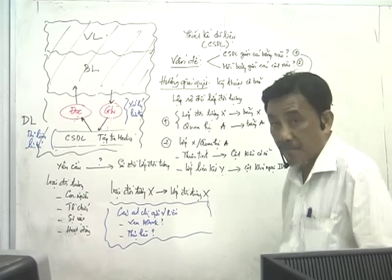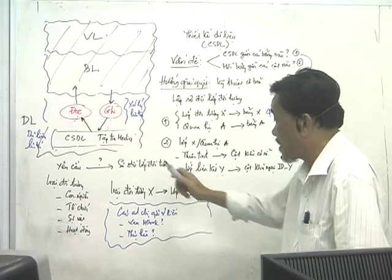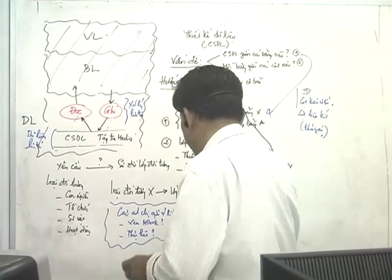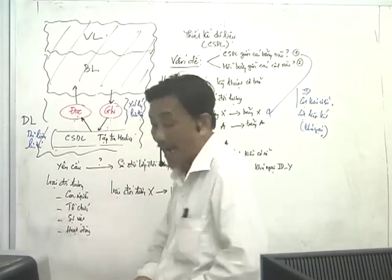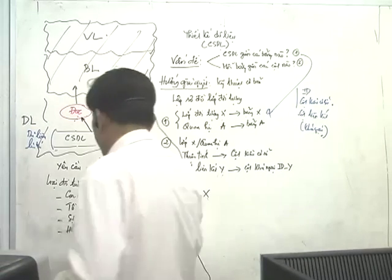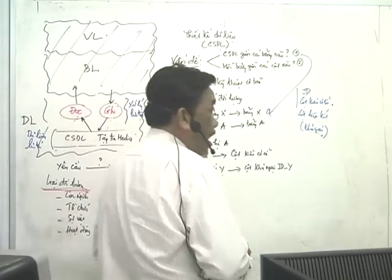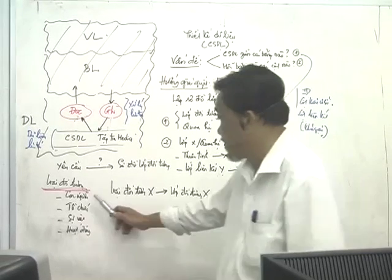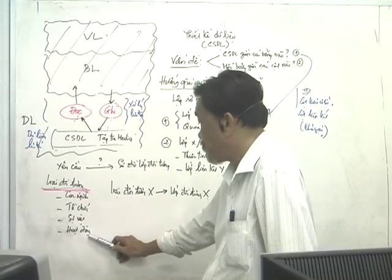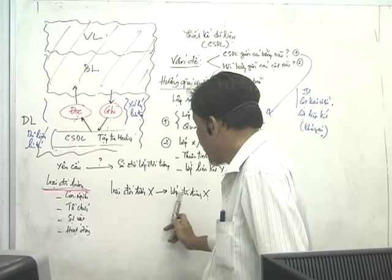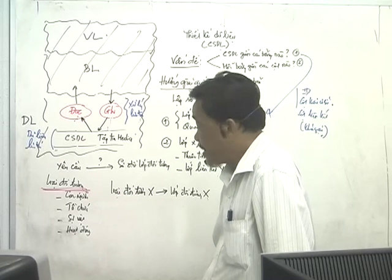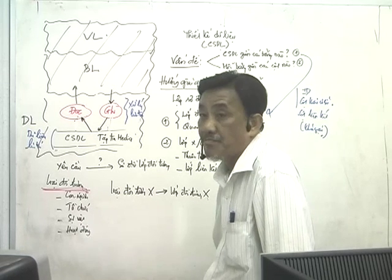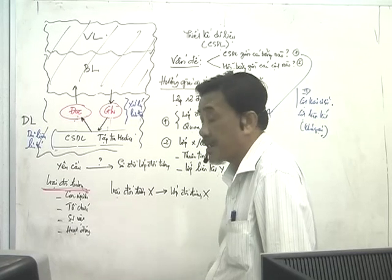Sơ đồ lớp đối tượng đã học trong chương 1, nhưng tôi quay lại nói sơ lược. Sơ đồ lớp đối tượng dựa trên nền tảng là xác định những loại đối tượng ngoài thực tế. Thuật ngữ loại đối tượng rất quan trọng - trong sơ đồ lớp nó gọi là lớp đối tượng, còn ở đây tôi dùng từ loại. Có 4 loại đối tượng là: con người, tổ chức, sự vật và hoạt động. Mỗi loại đối tượng tương ứng với một lớp đối tượng.